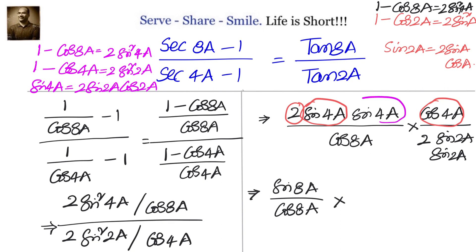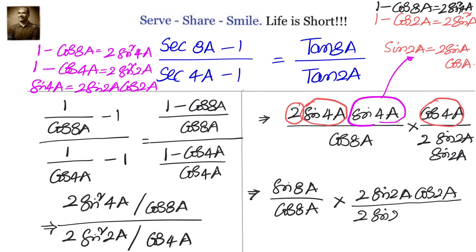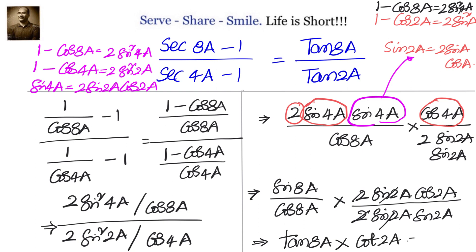Only left is to get tan2a in the denominator. The remaining sin4a must be converted to a lower level: sin4a = 2 sin2a cos2a. In the denominator we have 2 sin2a × sin2a. We can cancel 2 sin2a, leaving sin8a / cos8a × cos2a / sin2a, which is tan8a × cot2a. This equals tan8a / tan2a, which is the right hand side — what we needed to prove.